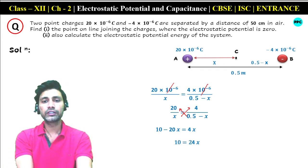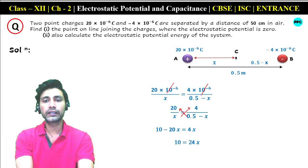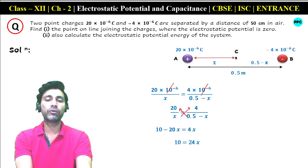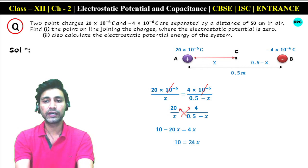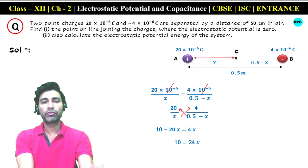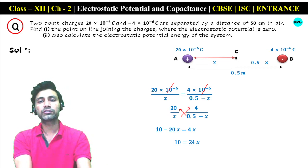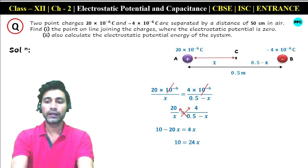The 10⁻⁶ terms cancel each other. On solving this by cross multiplication, we get 10 equals 24X. Moving minus 20X to the right side gives plus 20X, so 20X plus 4X equals 24X.